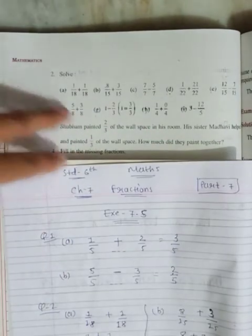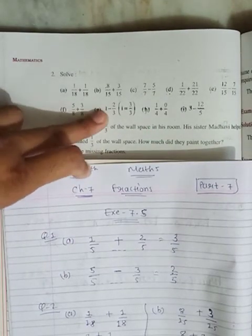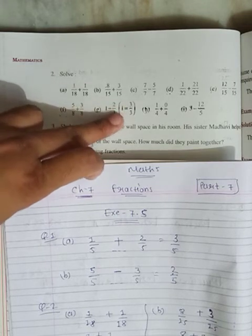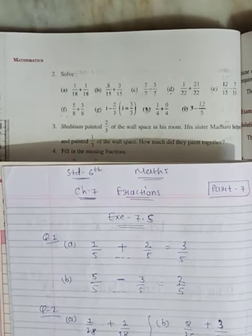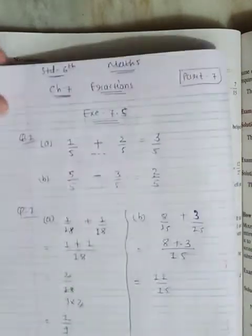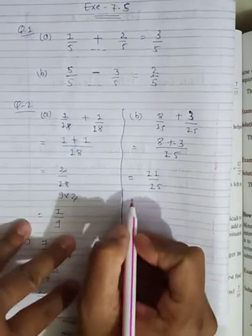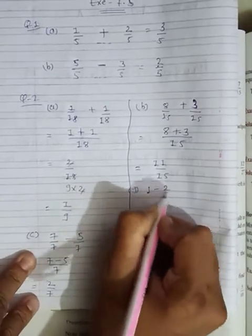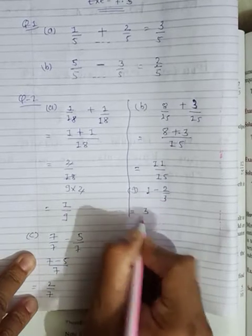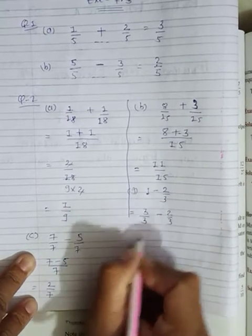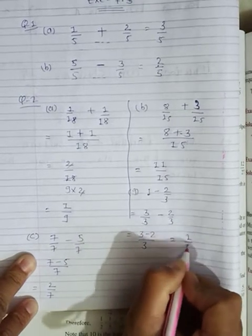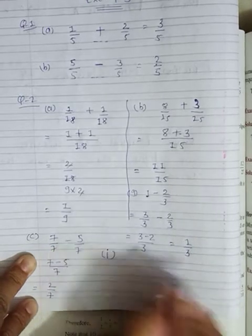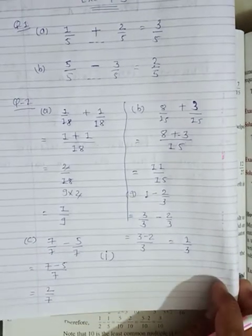For G number: one minus two upon three. Here, one is equal to three upon three as given in the bracket. The meaning of three upon three is three divided by three equals one, so you can write three upon three in place of one. So G number: one minus two upon three becomes three upon three minus two upon three. Since denominators are the same, three minus two gives one upon three. That is your answer.